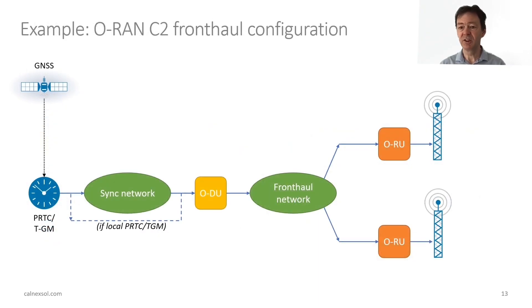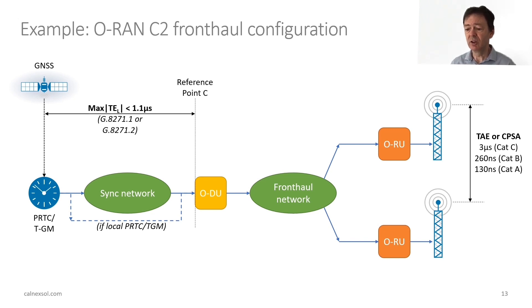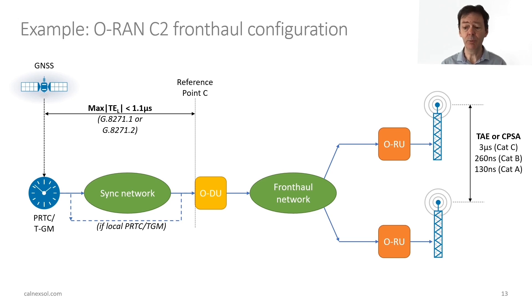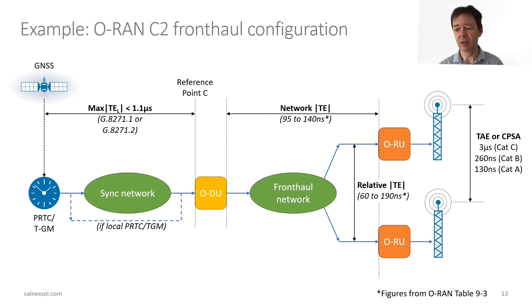This diagram shows the C2 configuration in a bit more detail — C1 is very similar but without the fronthaul network. On the left you can see the time alignment error and cell phase synchronisation accuracy requirements on the radios, and on the right you can see the timing requirement at the input to the DU. It could be receiving its synchronisation reference through a G.8271.1 or a G.8271.2 network, so there could be as much as 1.1 microseconds of time error at the input to the DU. The network time error for the fronthaul network between DU and RU could be somewhere between 95 to 140 ns, and the relative time error between two radio units could be somewhere around 60 to 190 ns, depending on the requirements.